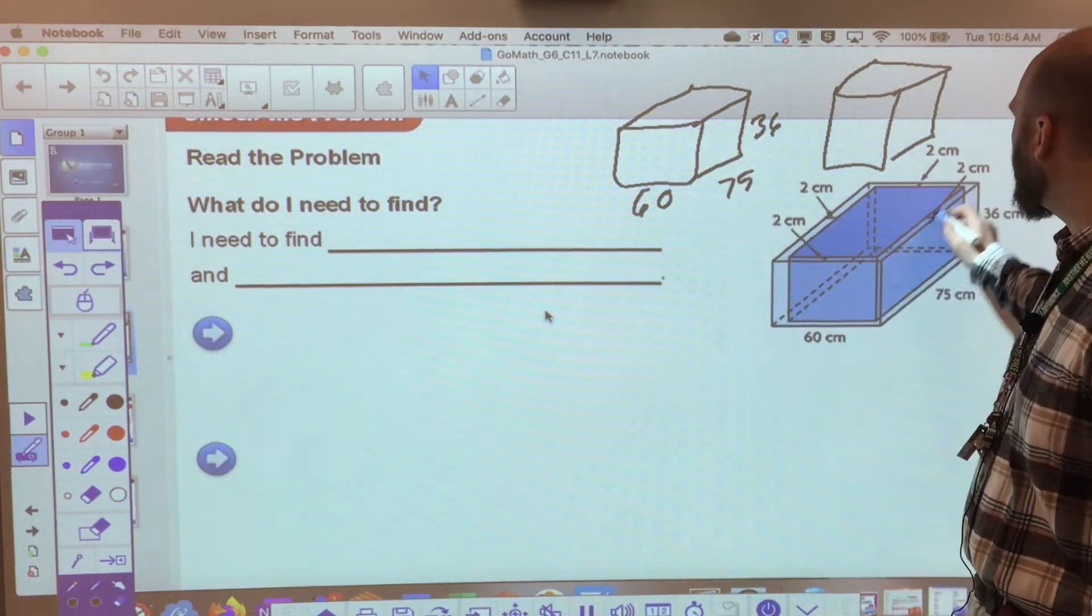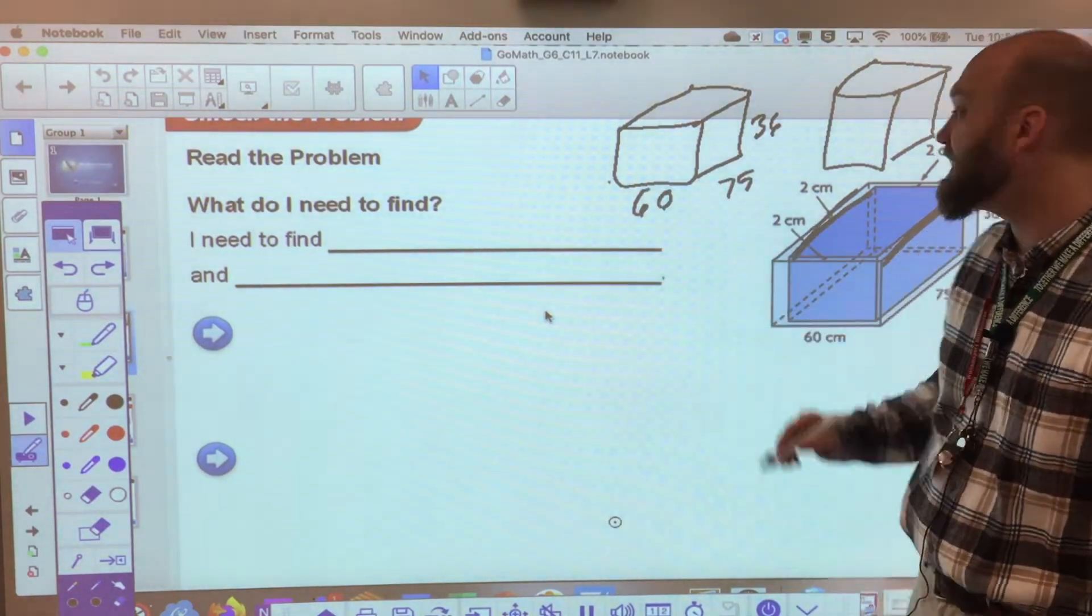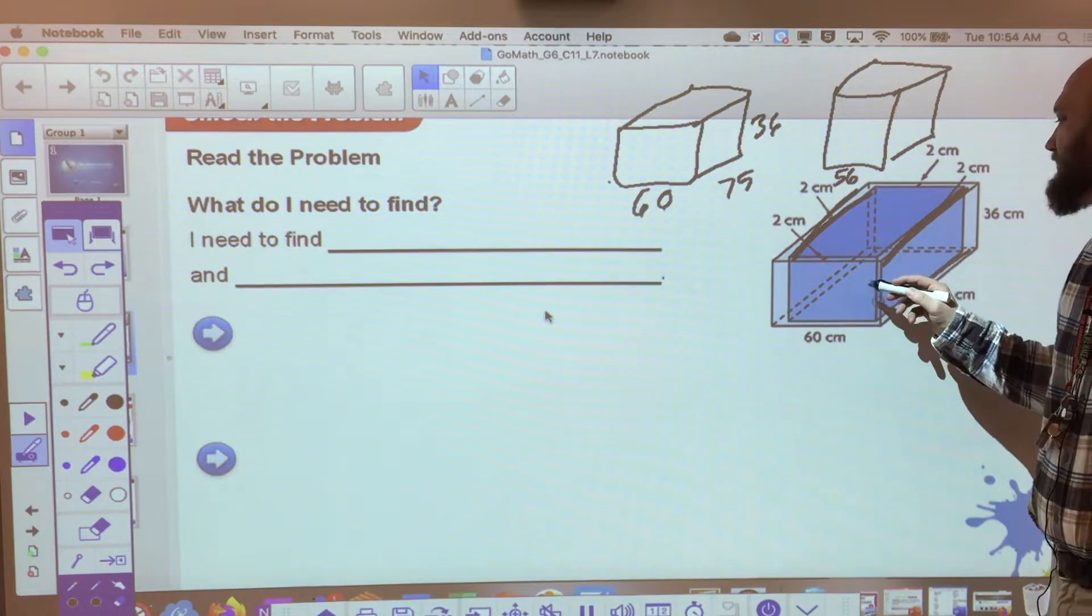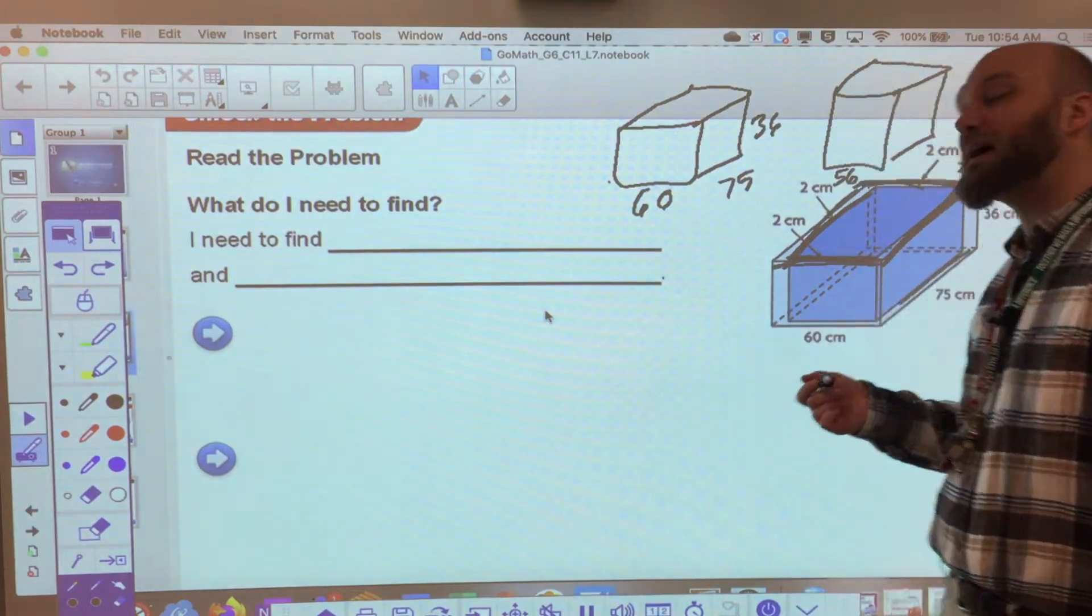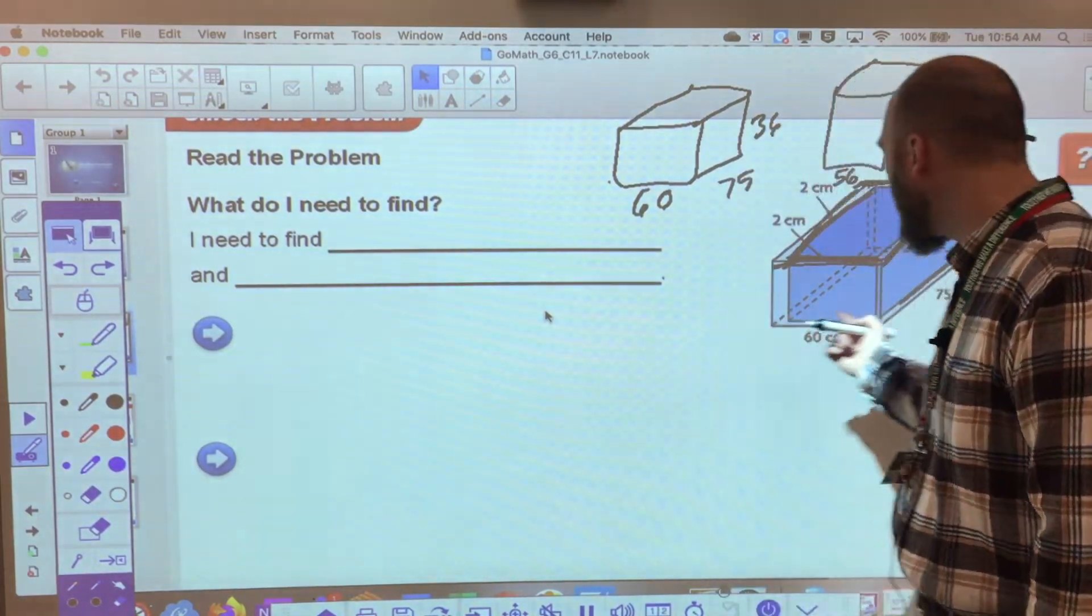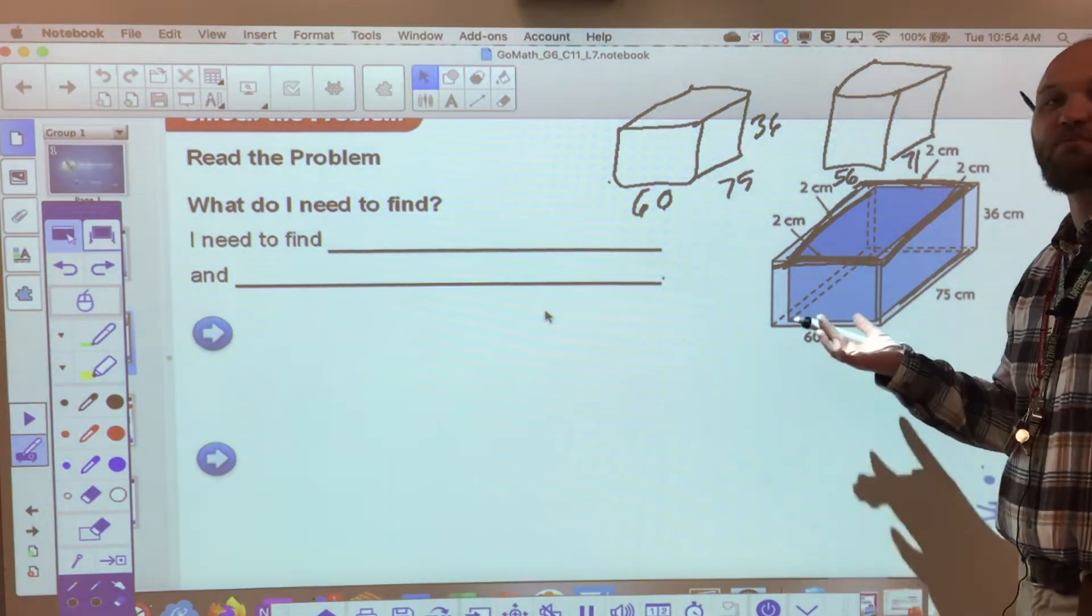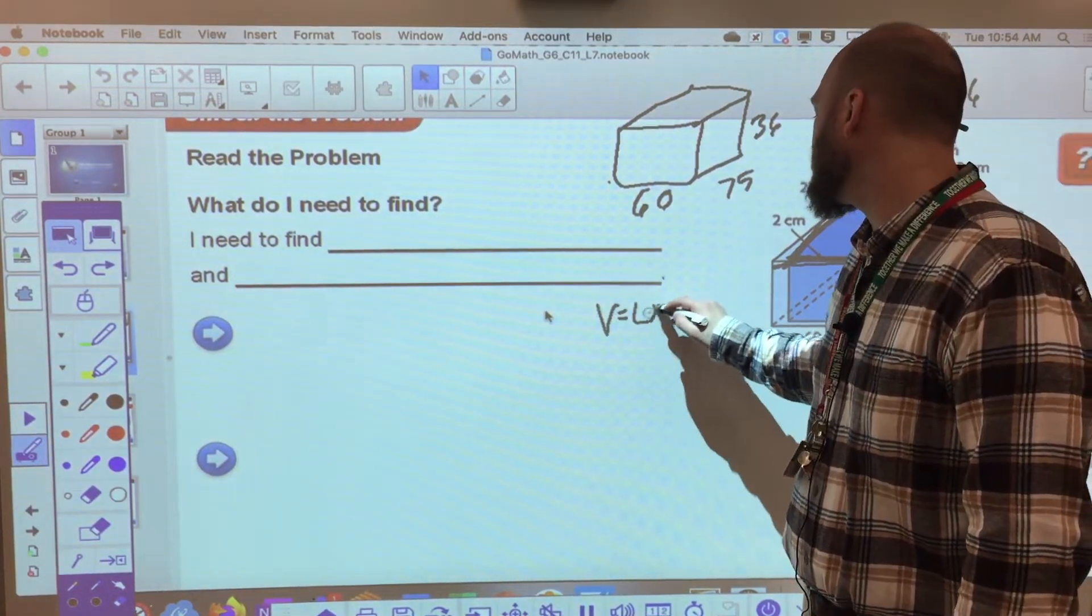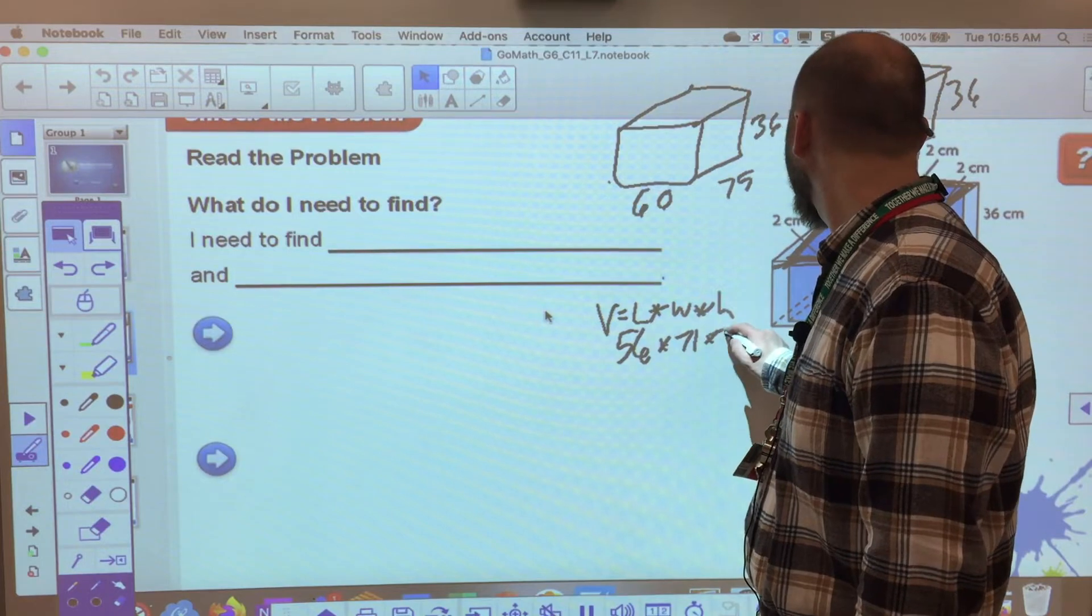So if it's 2 centimeters off the right and 2 centimeters off the left, 60 minus 2 on the right is 58, minus 2 on the left is 56. It's 75 deep, but we're missing 2 off the front and 2 off the back. 75 minus 2 off the front is 73, minus 2 off the back is 71. And I did not change the top or the bottom. There's nothing that says my glass down here is 2 inches thick on the bottom. Nothing that says I have any more space on top, so let's see what we have. 56 by 71, so 36 stays the same. Volume equals length times width times height, or base times width times height. 56 times 71 times 36.